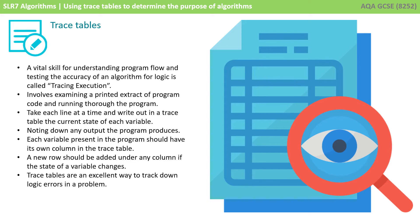You would take each line one at a time and write out in a trace table the current state of each variable. You would note down any output the program produces as it happens. Every variable in the program would have its own column in the trace table, and you would add a new row under any column if the state of that variable changed.